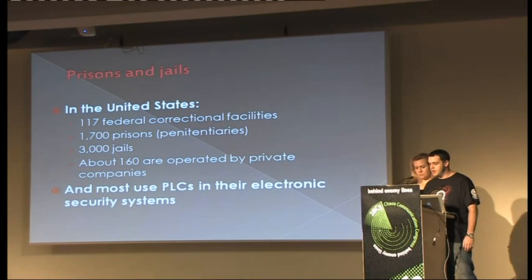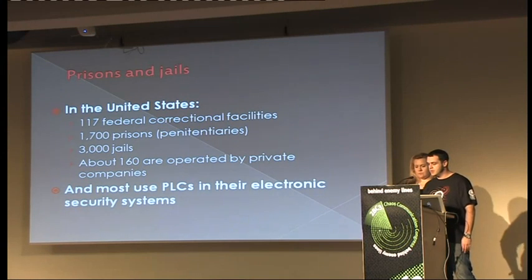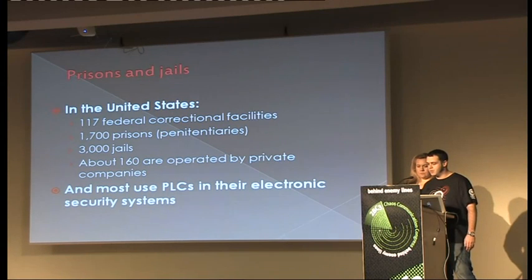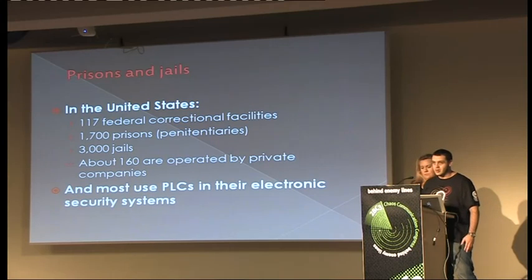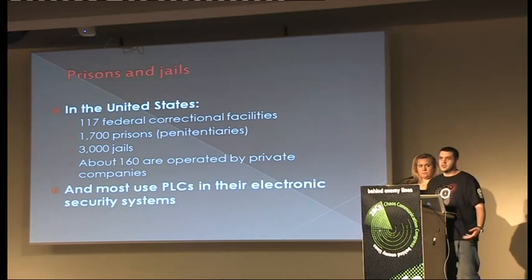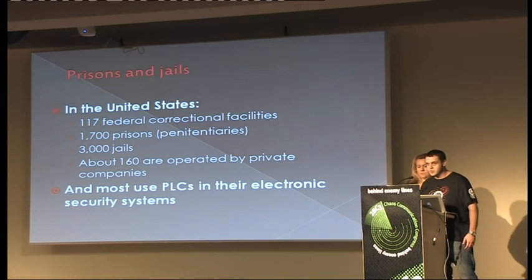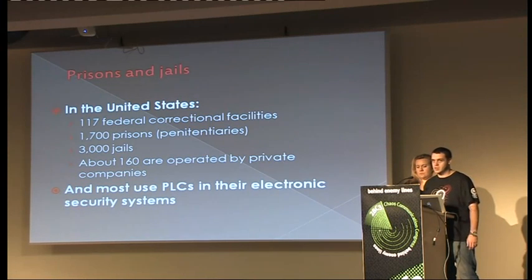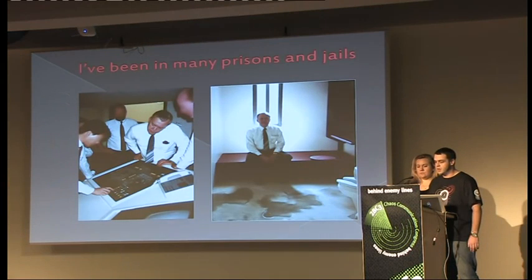In the United States there are about 117 federal correctional facilities, about 1,700 prisons and 3,000 jails. About 160 of those are operated by private companies. Most will actually use PLCs as well, except for the smaller facilities where it's not necessary.